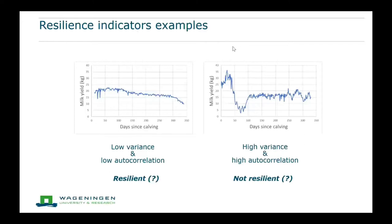To show an example from our dataset: on the left there's a cow with low variance and low autocorrelation, and on the right there's a cow with high variance and high autocorrelation. According to the theory, the left one should be resilient and the right one not resilient, and that seems quite plausible for these two cows.